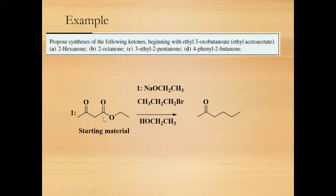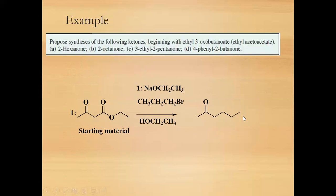To synthesize 2-hexanone: the starting material is ethyl acetoacetate. The alpha carbon is identified, and we need one, two, three carbons added. Sodium ethoxide is used to form the carbanion, which is then alkylated with a propyl alkyl halide to add three carbons. The ester is then hydrolyzed, followed by decarboxylation — the bond breaks to give 2-hexanone.